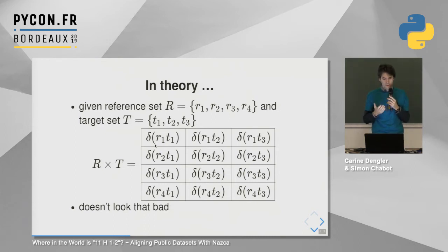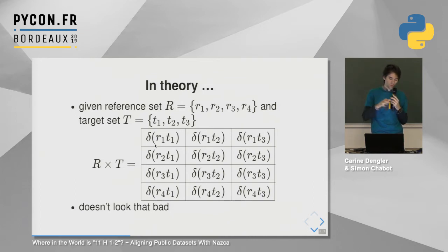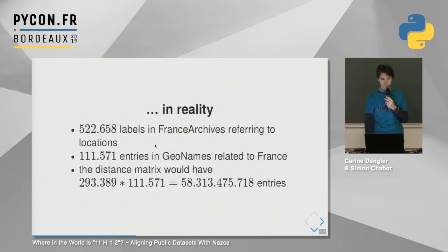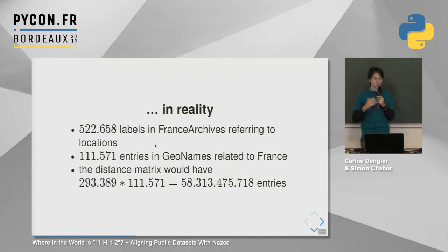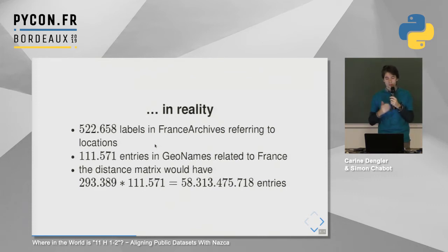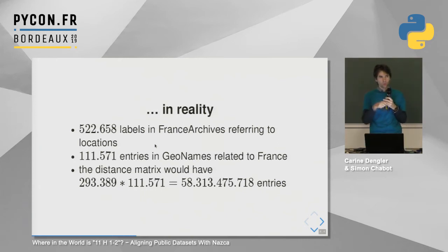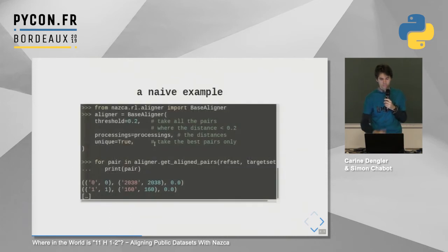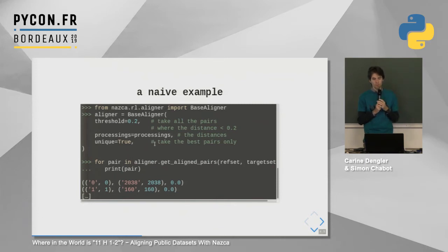If you do this naively — building the whole matrix — it will take a very long time. In reality the numbers are really huge: we have more than 65 billion entries if you compute the whole matrix. So it's not possible to compute all distances this way, and we need to improve on the naive approach.